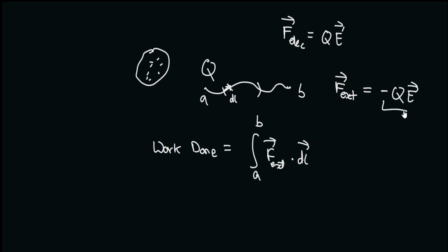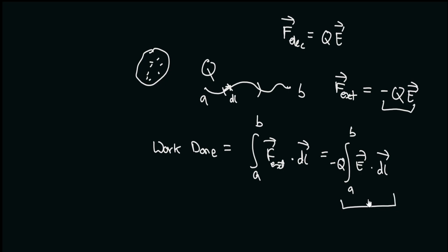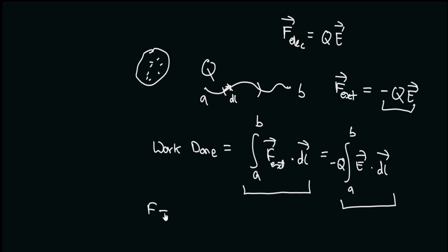Now we can write this external force and make that substitution. In the previous video, we saw that the line integral of the electric field was independent of the path — that is, the electric field did not depend on the path. So we said that the electric field was a conservative field. And since this integral does not depend on the path, therefore this line integral of the force also does not depend on the path. When a line integral of a force is independent of the path, we call that force conservative.